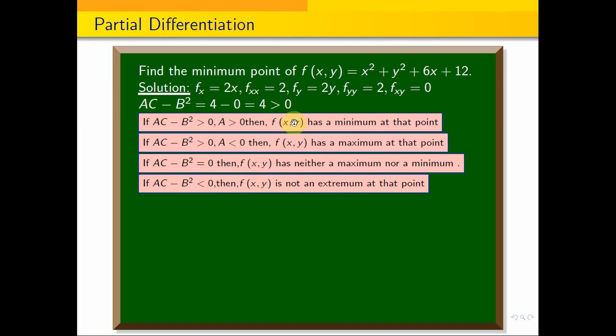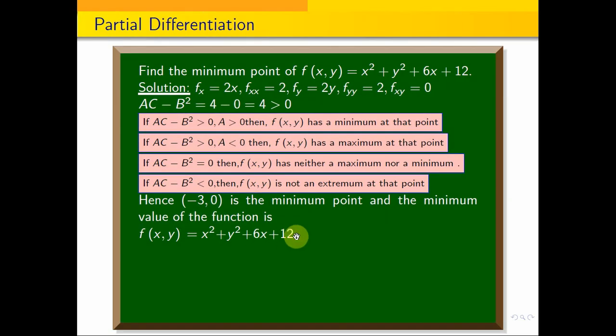Since AC - B² > 0 and A > 0, we have a minimum point. The minimum value is: f(-3, 0) = (-3)² + 0² + 6(-3) + 12 = 9 - 18 + 12 = 3.